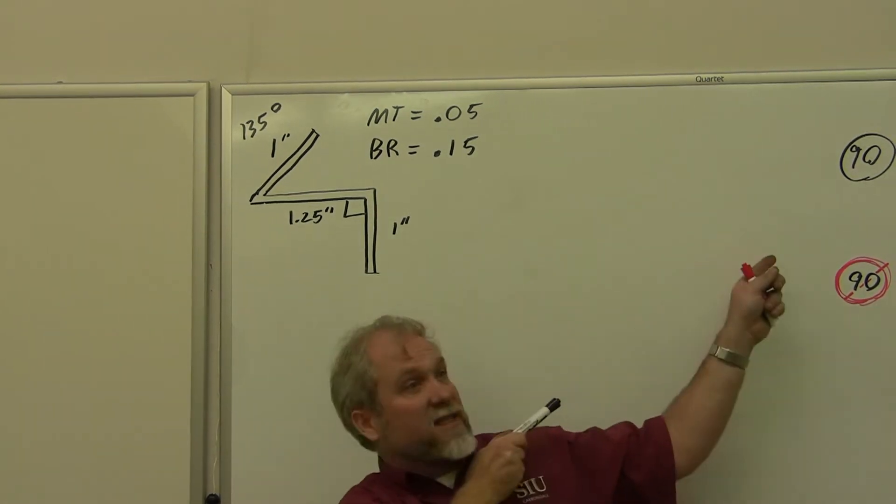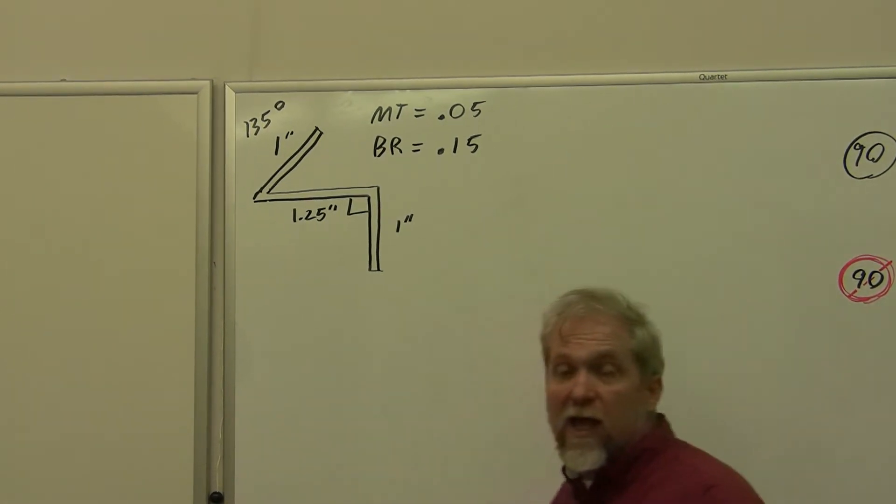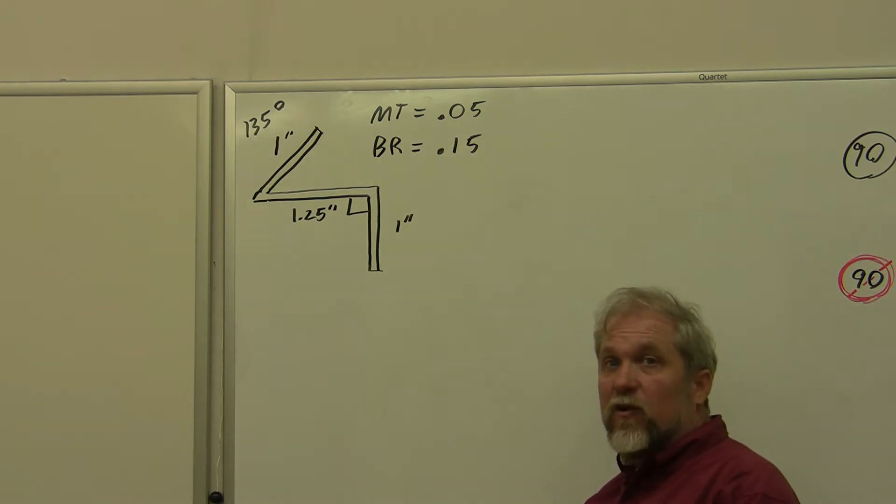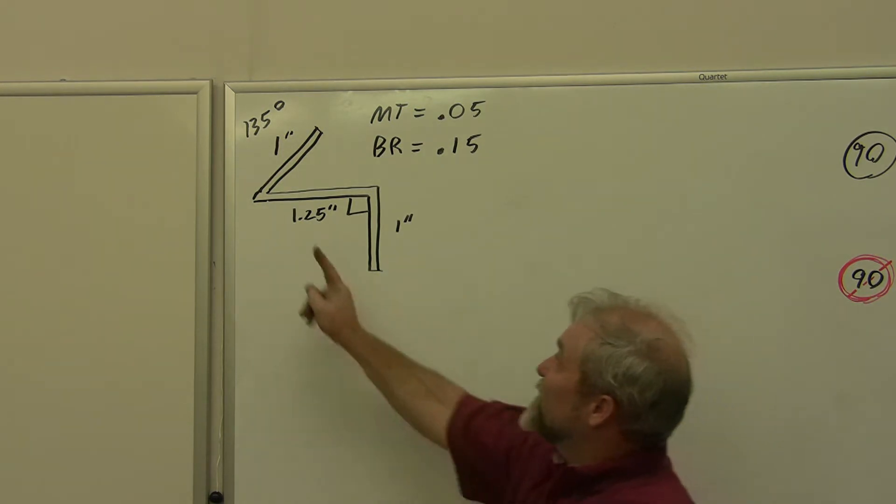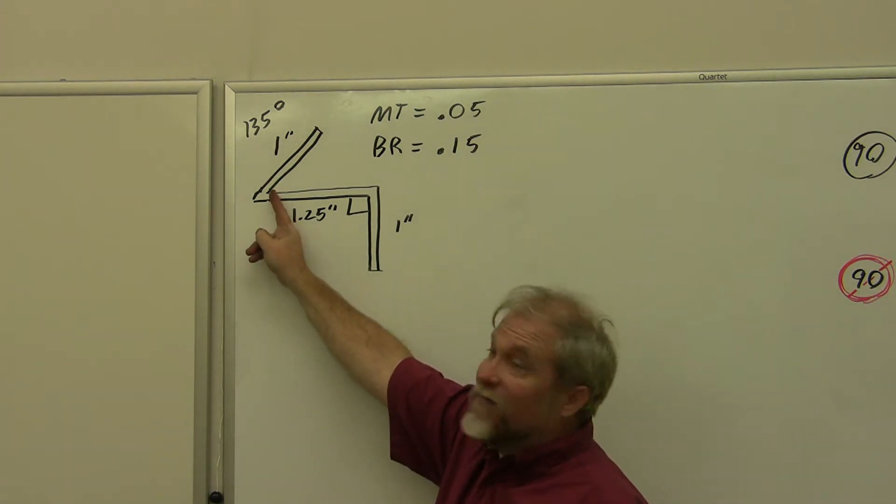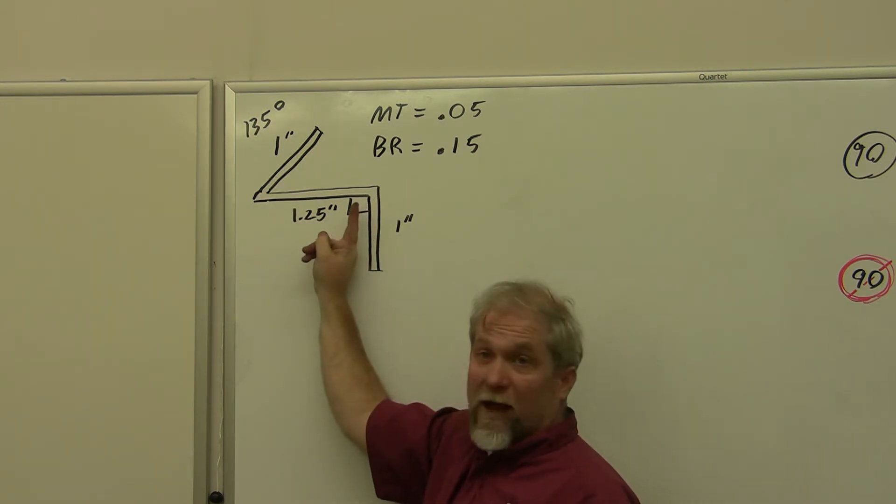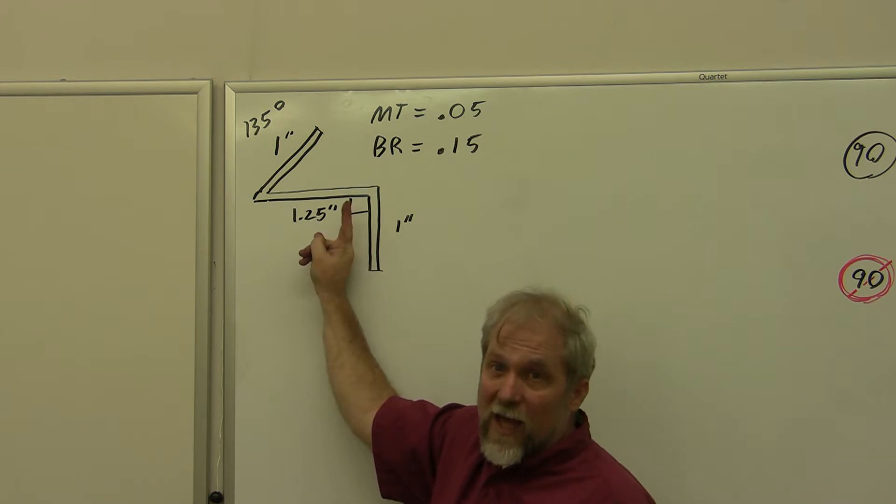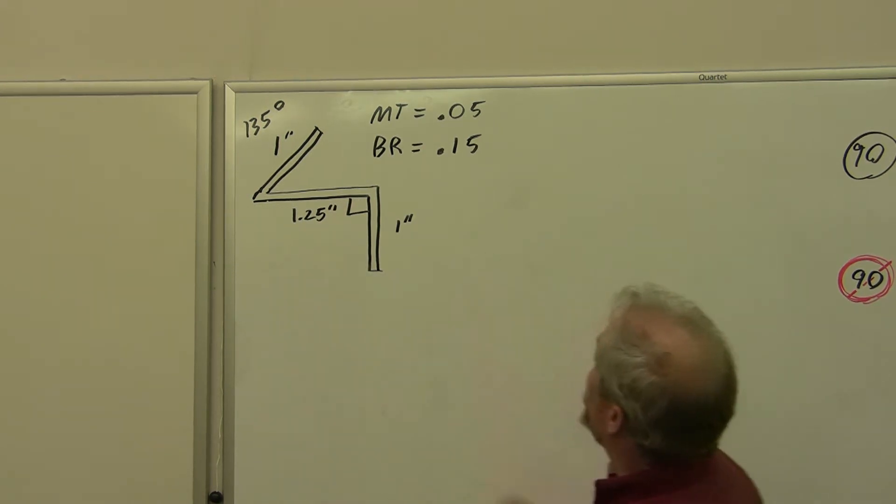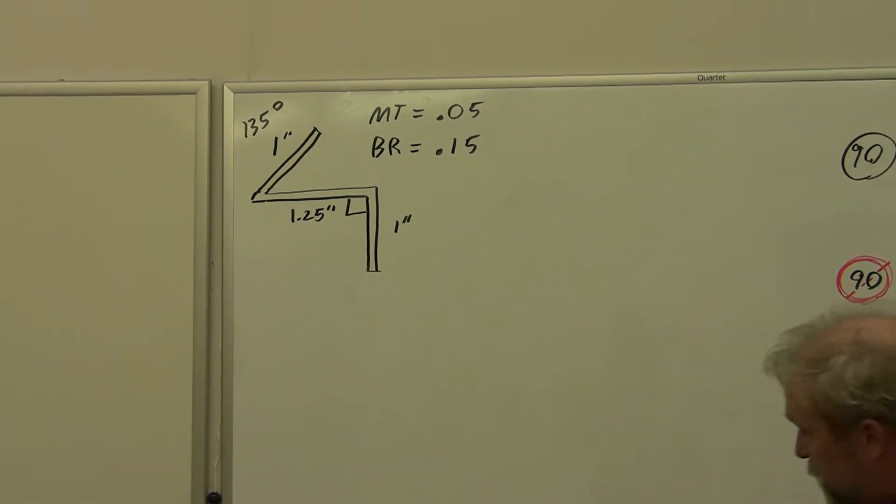We're going to put all kinds of pieces from our formulas together to get this. The most important thing I need you to watch out for is we're going to have a setback for 135 and a setback for 90, a bend allowance for 135 and a bend allowance for 90. So let's go ahead and begin.